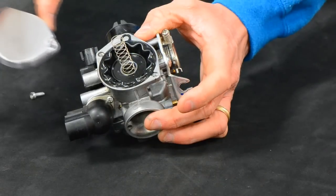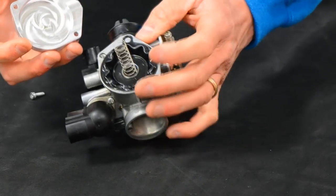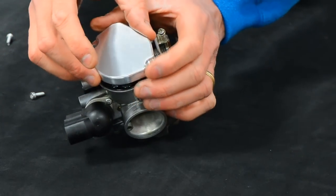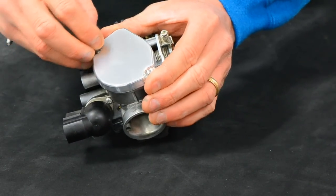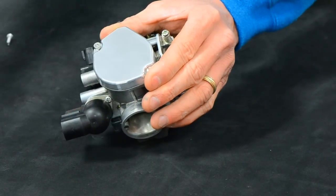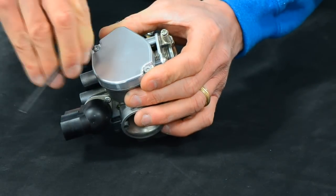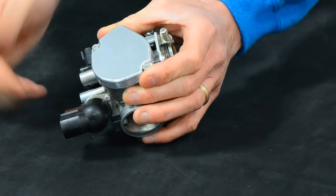Now we're going to install the new billet piece. Much like the stock unit, it has a boss inside to locate this spring. So we're going to take just a second and line that up. Ease the part down. Use two of the supplied stainless Allen heads to snug that up. And that job is finished.